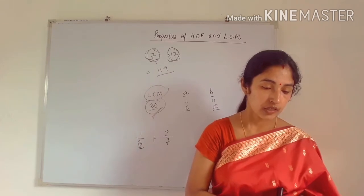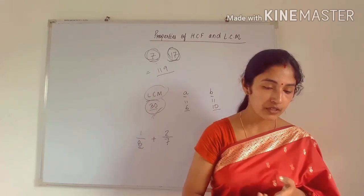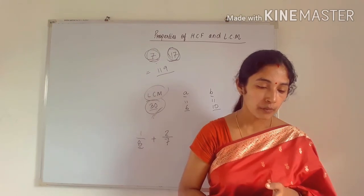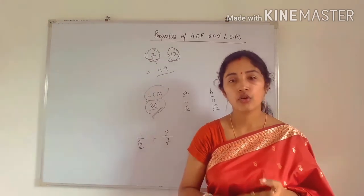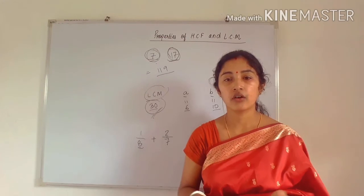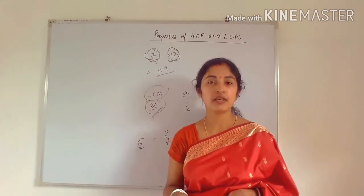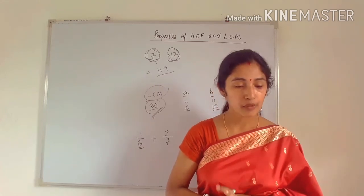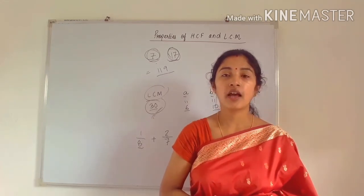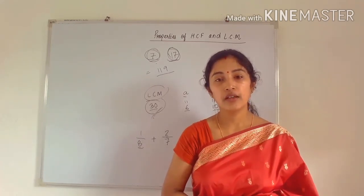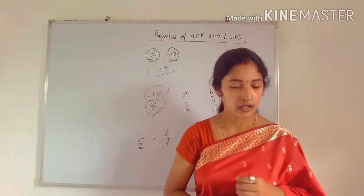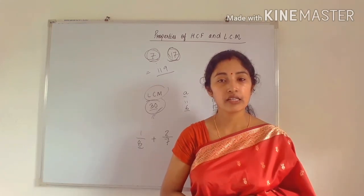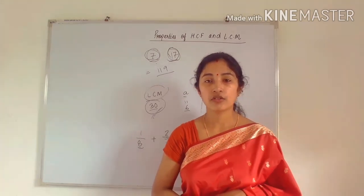Property 6: HCF of two or more prime numbers is 1. For example, 2 and 3 are prime numbers — their HCF is 1. If you take any two prime numbers, the highest common factor will always be 1. Learn these properties and write them down. For property 5, take an example with two numbers, find their HCF and LCM, and verify the property.